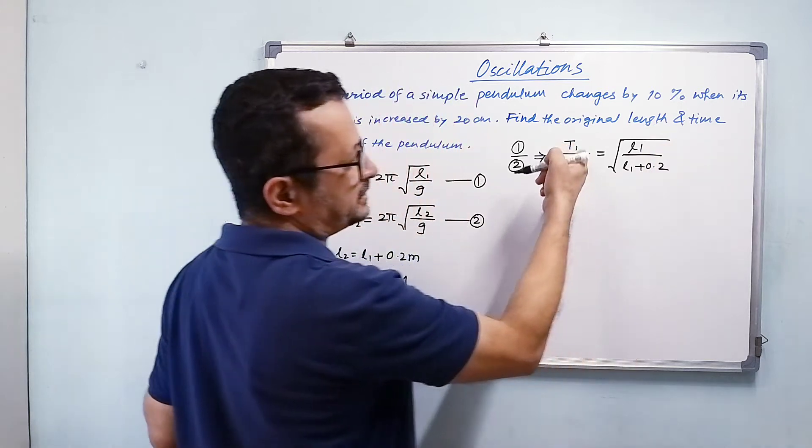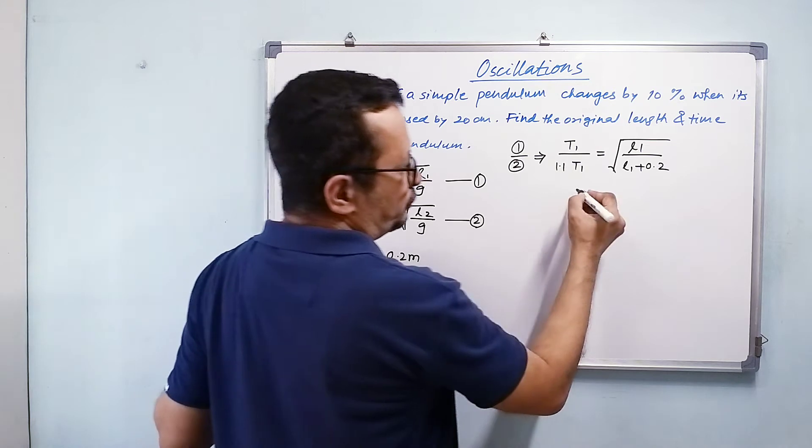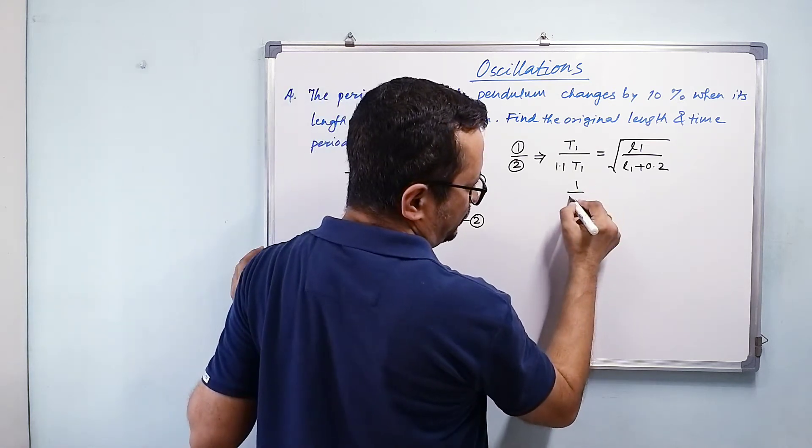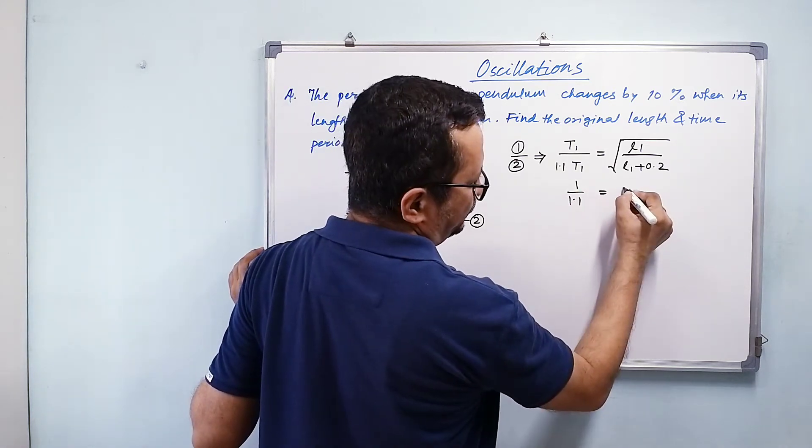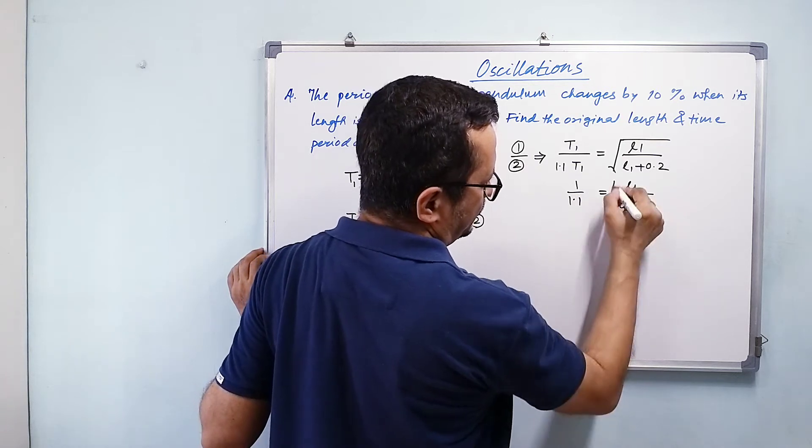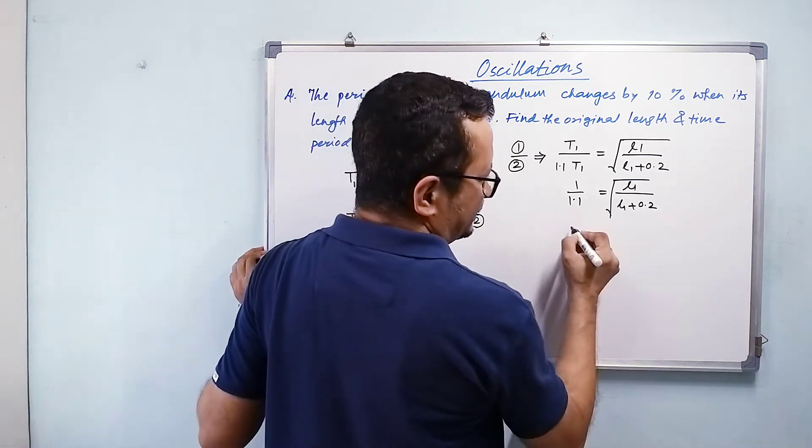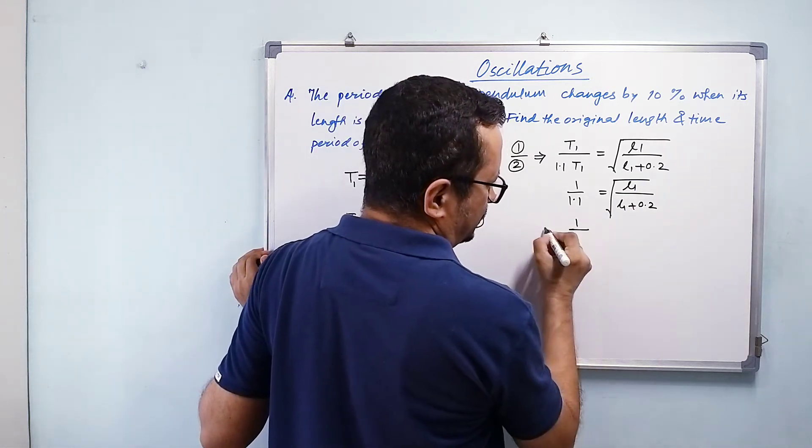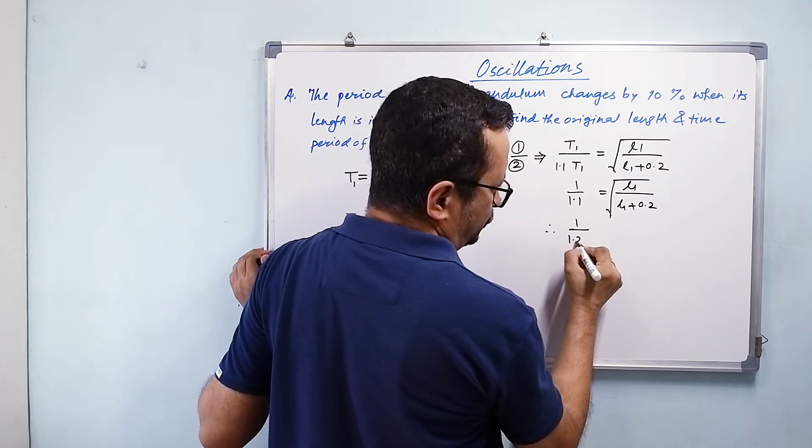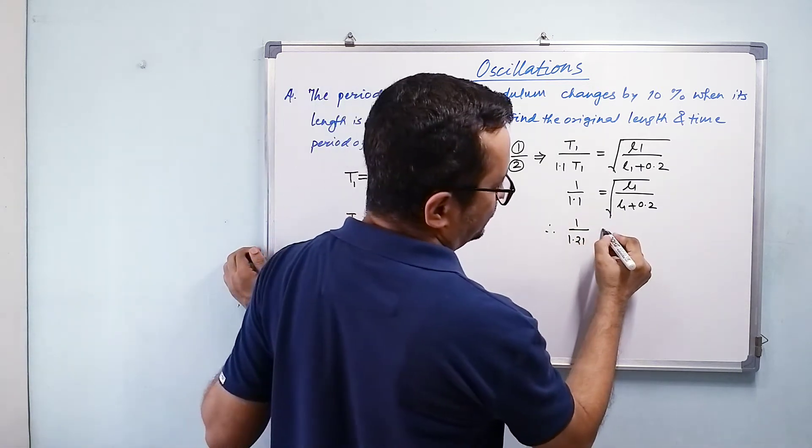This T₁ and T₁ will get cancelled, so what we are left with is 1/1.1 = √(l₁/(l₁ + 0.2)). So let us square it: 1/1.21, I am squaring this 1.1 to 1.21, and that would equal l₁/(l₁ + 0.2).